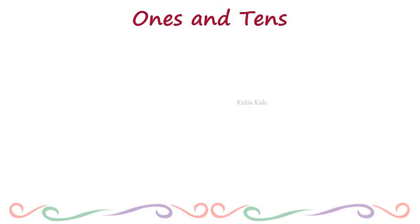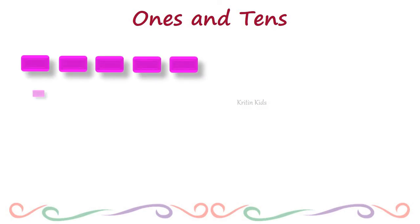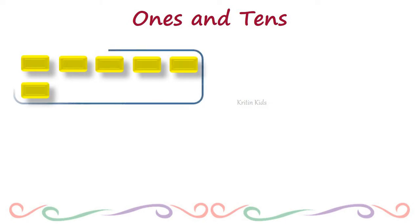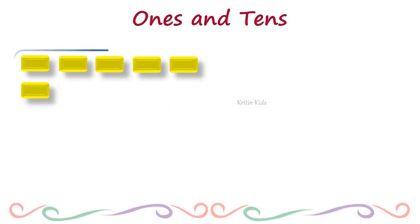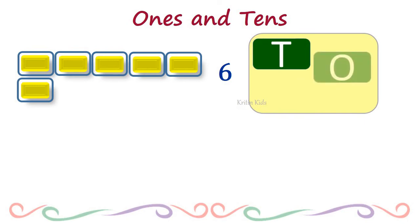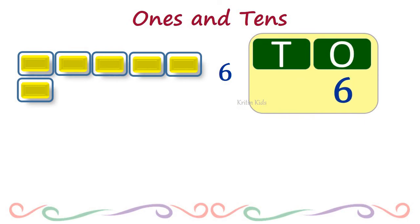Likewise, we have one more example. Here are some more blocks. Let us count them: 1, 2, 3, 4, 5, 6. Can we put them in the 10s block? No. Now we have to use all the 1s blocks: 1, 2, 3, 4, 5, 6. So 6 has place value of 1s.